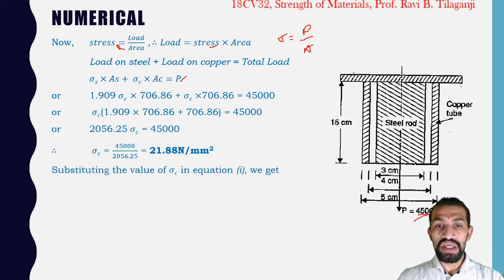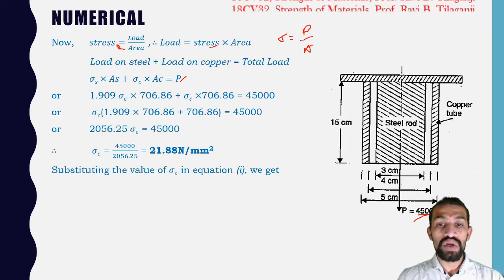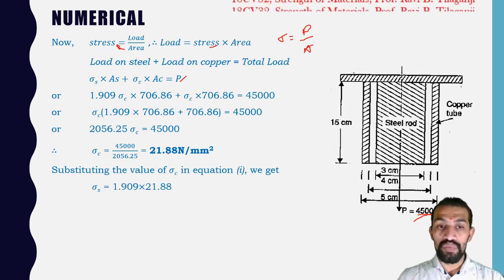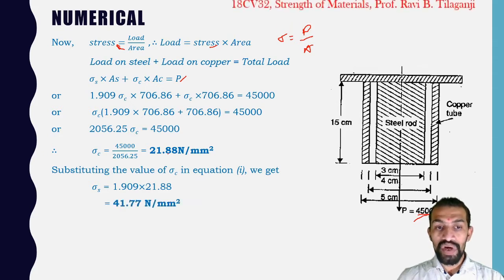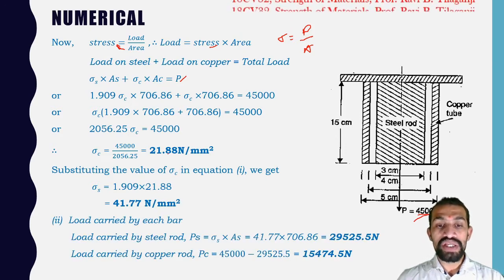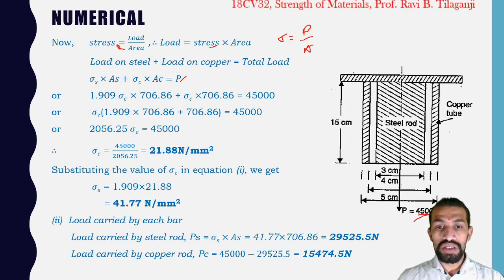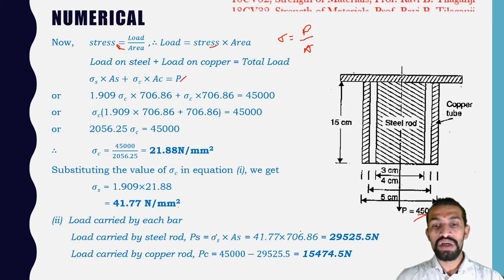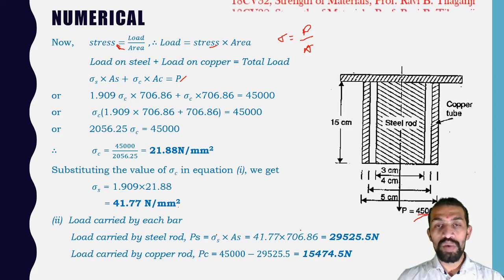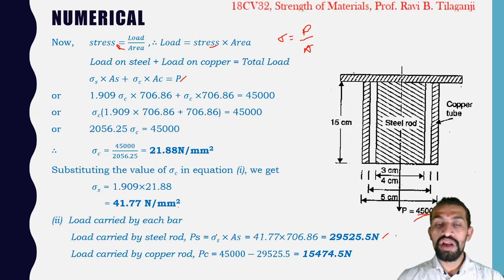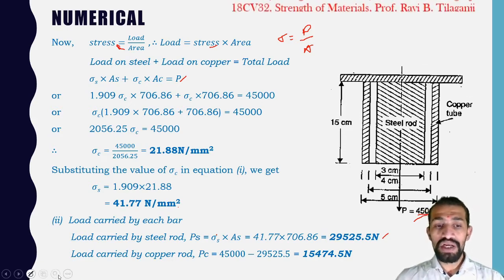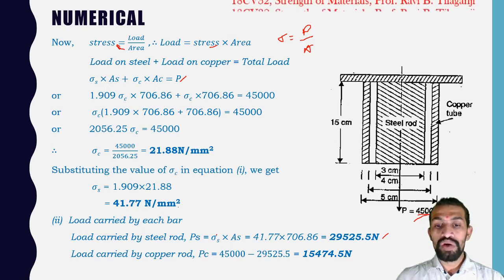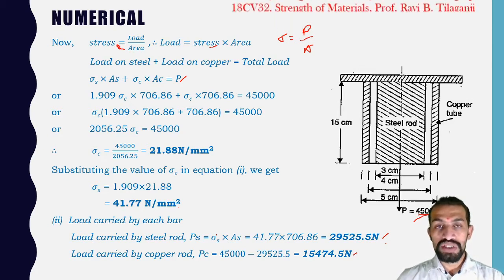Substituting σC back into Equation 1: σS = 1.909 × 21.88 = 41.77 N/mm². Load carried by steel rod: PS = σS × AS = 41.77 × 706.86 = 29,525.5 Newton. Load carried by copper: PC = 45,000 − 29,525.5 = 15,474.5 Newton.